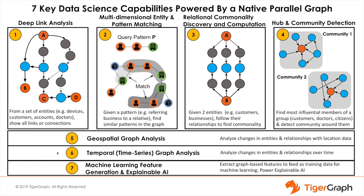Temporal time series graph analysis enables analysis of changes in entities and relationships over time. Temporal analysis is used to find suspected shell corporations that may be used for money laundering, bribery, or corruption, uncover referral relationships among prescribers or doctors, and understand changes in influencer behavior over time to identify compelling trends in commerce and equities markets.